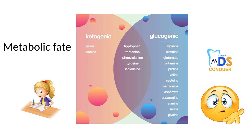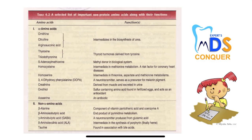Regarding metabolic fate, what comes under ketogenic and what comes under glucogenic: ketogenic are lysine and leucine, whereas both ketogenic and glucogenic include tryptophan, threonine, phenylalanine, tyrosine, and isoleucine. All others come under glucogenic.